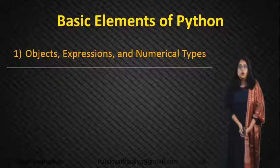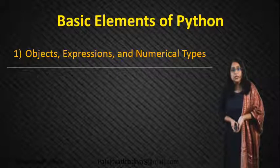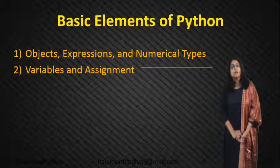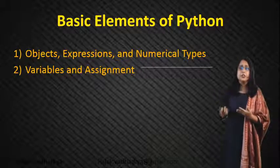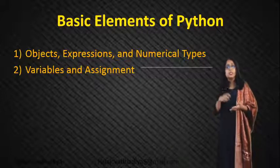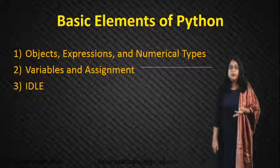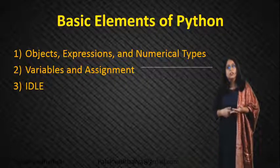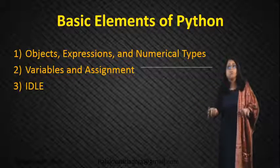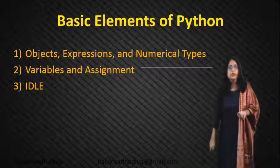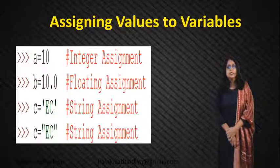The basic elements of Python are: objects — expressions or numerical types; variables and assignment — how we declare variables and assign different values; and IDEs such as PyCharm and Anaconda, which are different IDEs used to write Python. Now let's see how we can assign values to variables.